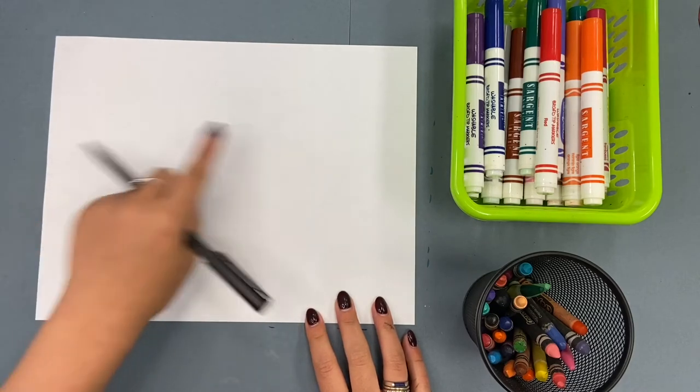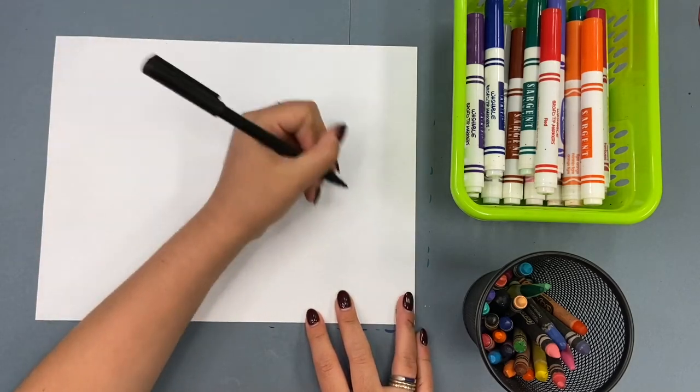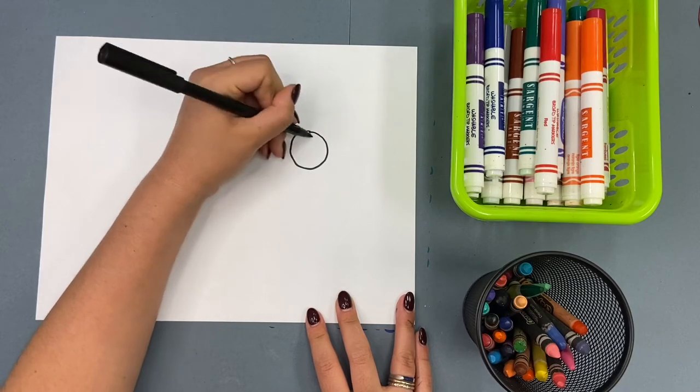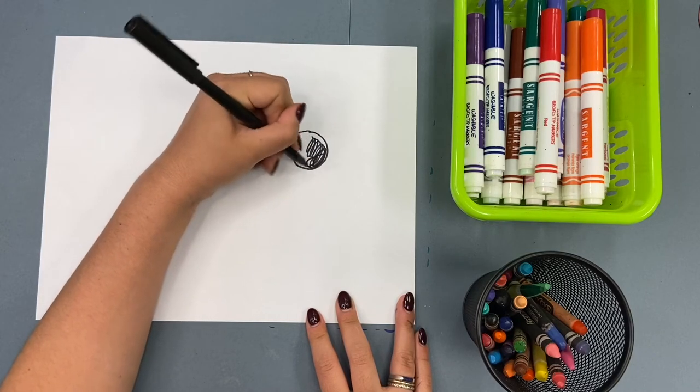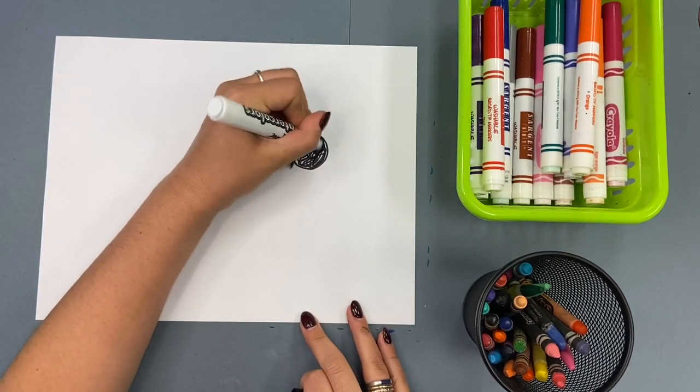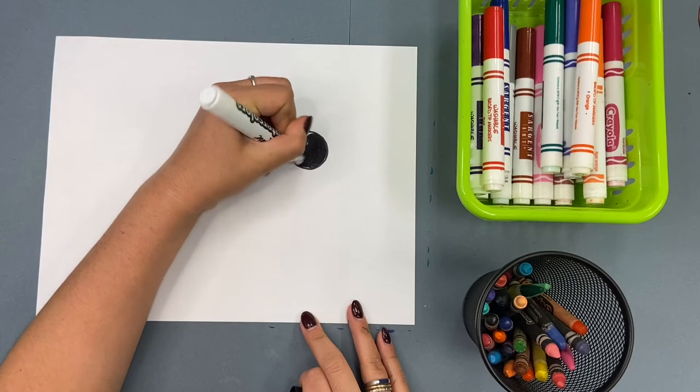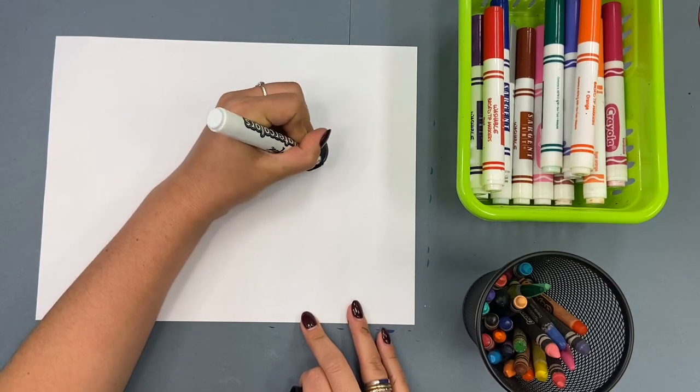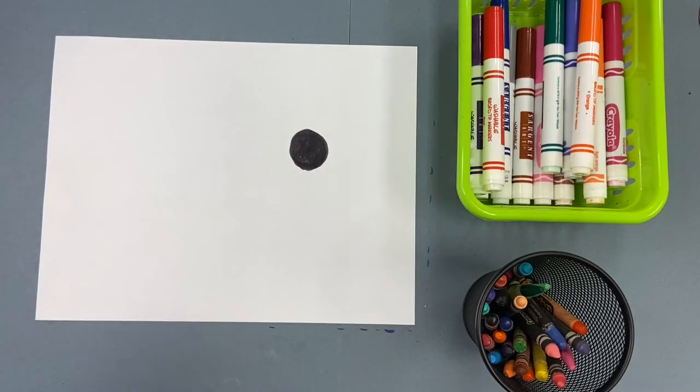The first thing I want you to draw is a dot the size of a quarter. It can be anywhere on your page. In fact, the only place it shouldn't be is exactly where my dot is. I want you to create your very own. So somewhere on your paper, draw a dot. Color it in.